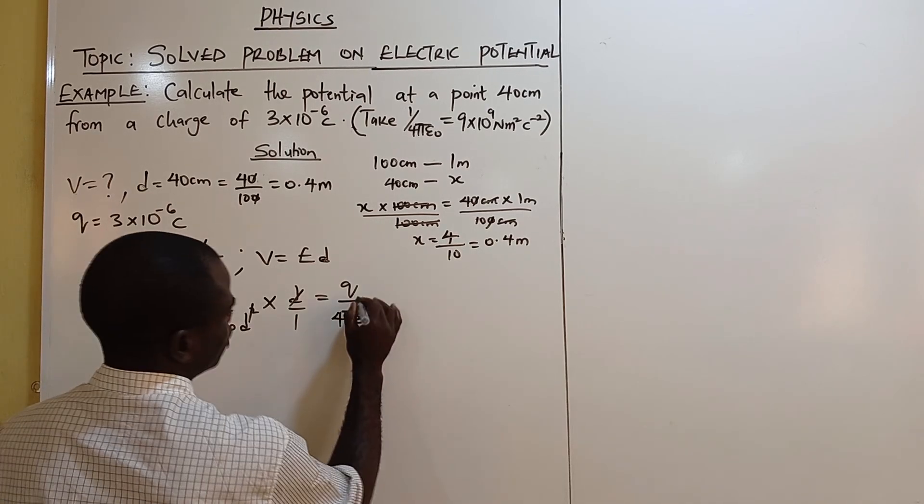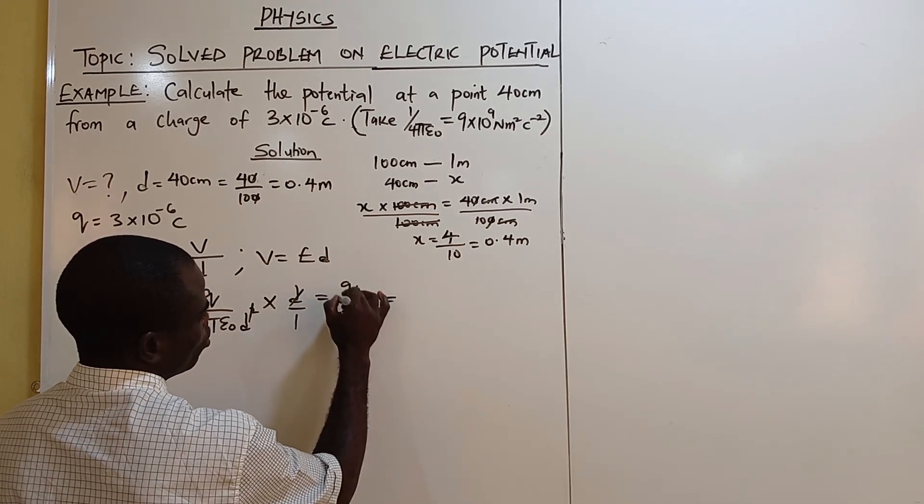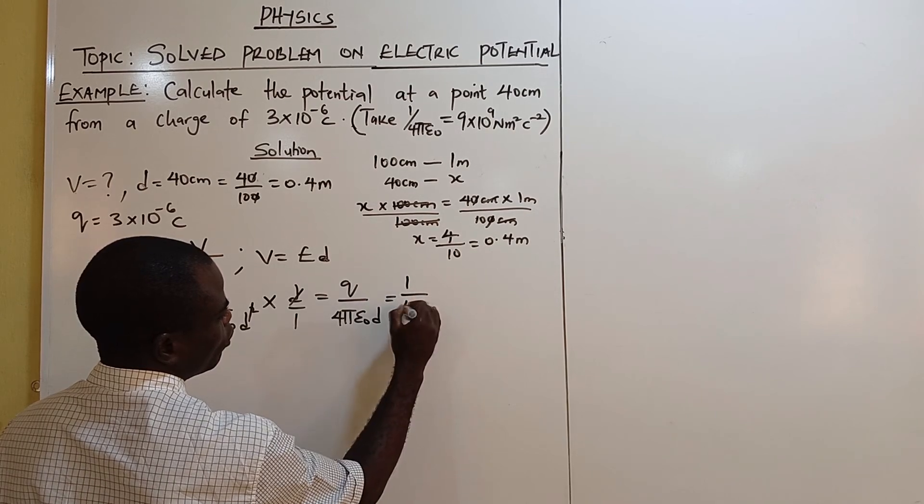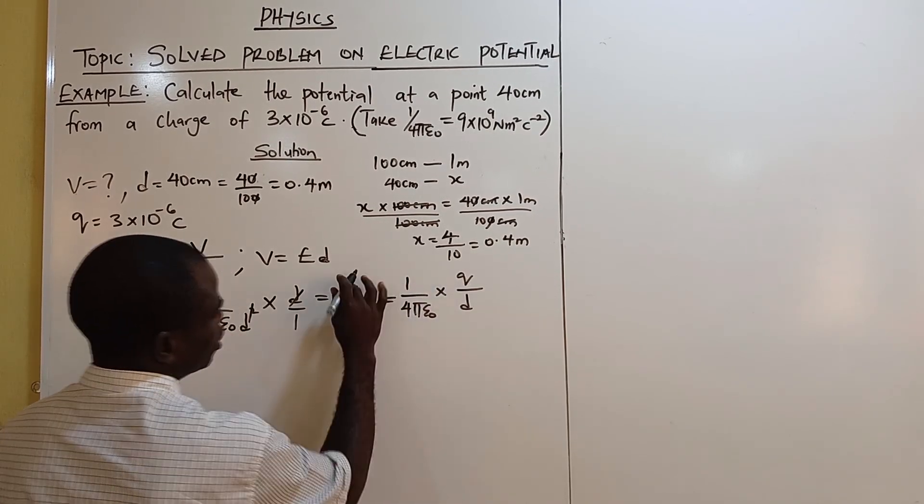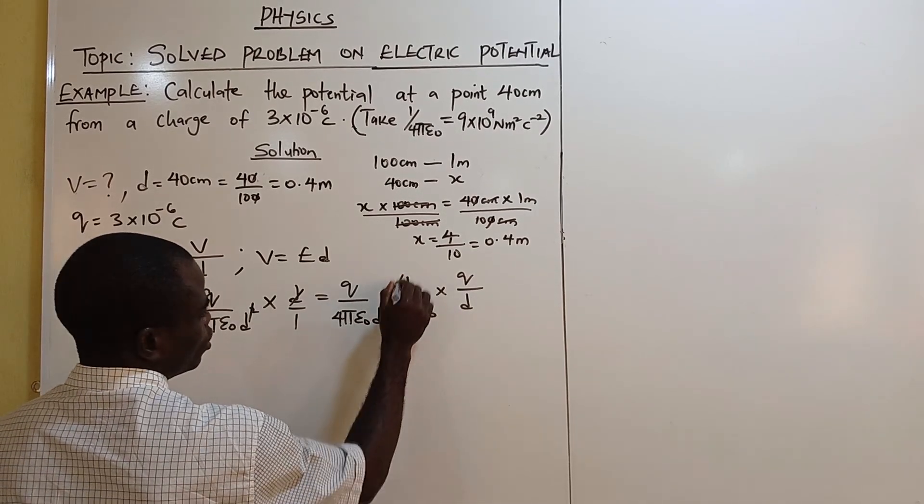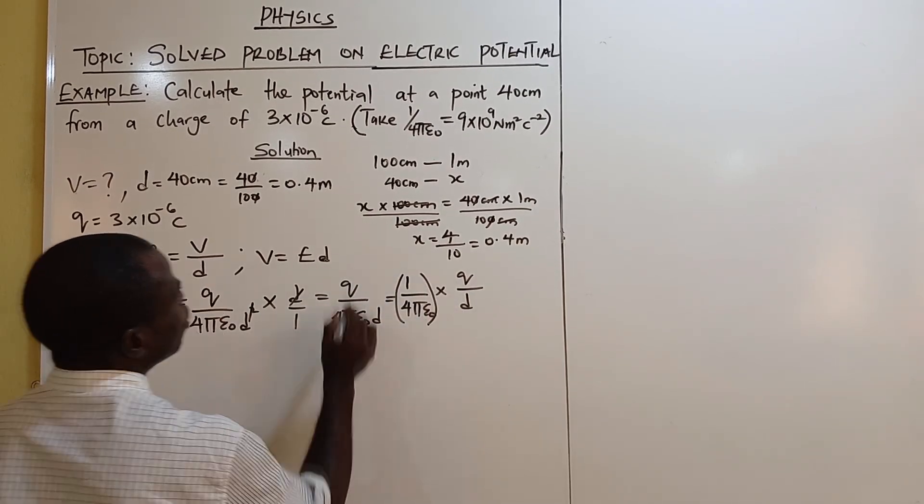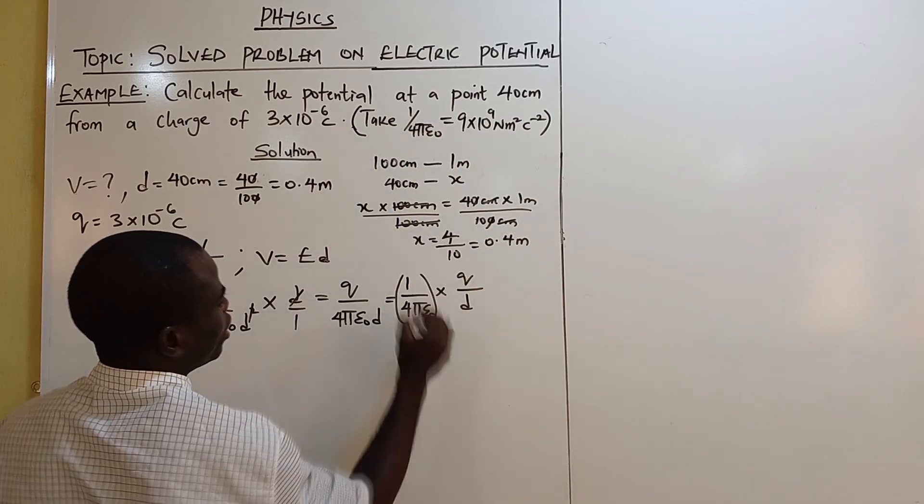Don't forget that the expression for this, let's separate them so that you know how it looks like. It's 1 over 4 pi epsilon naught times Q over D. This Q and D, I try to separate them. This one is standing as a whole. You can see it. You are replacing it with this value: 1 over 4 pi epsilon naught.